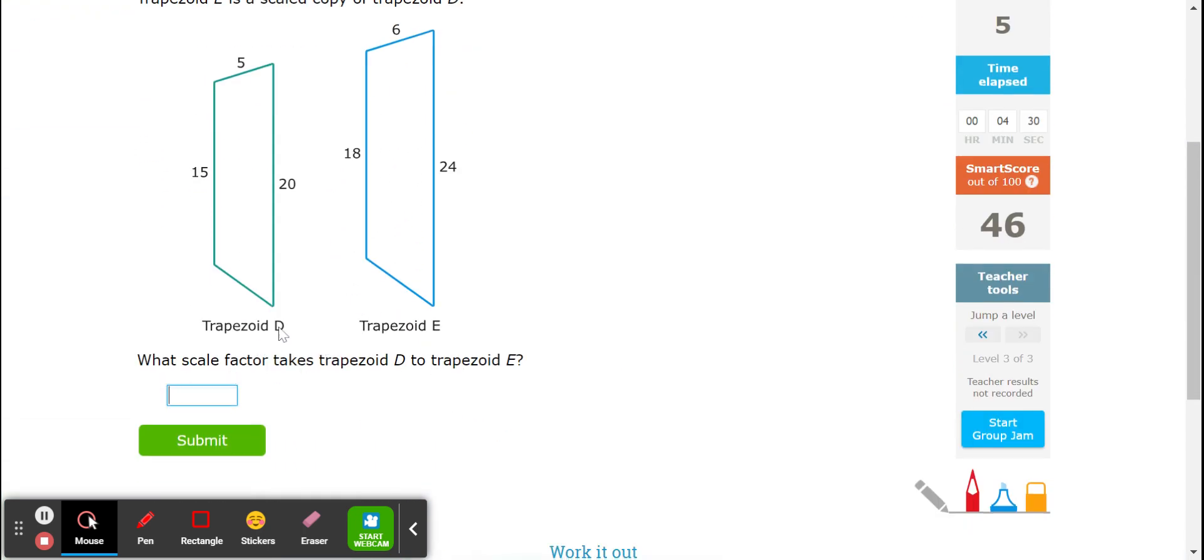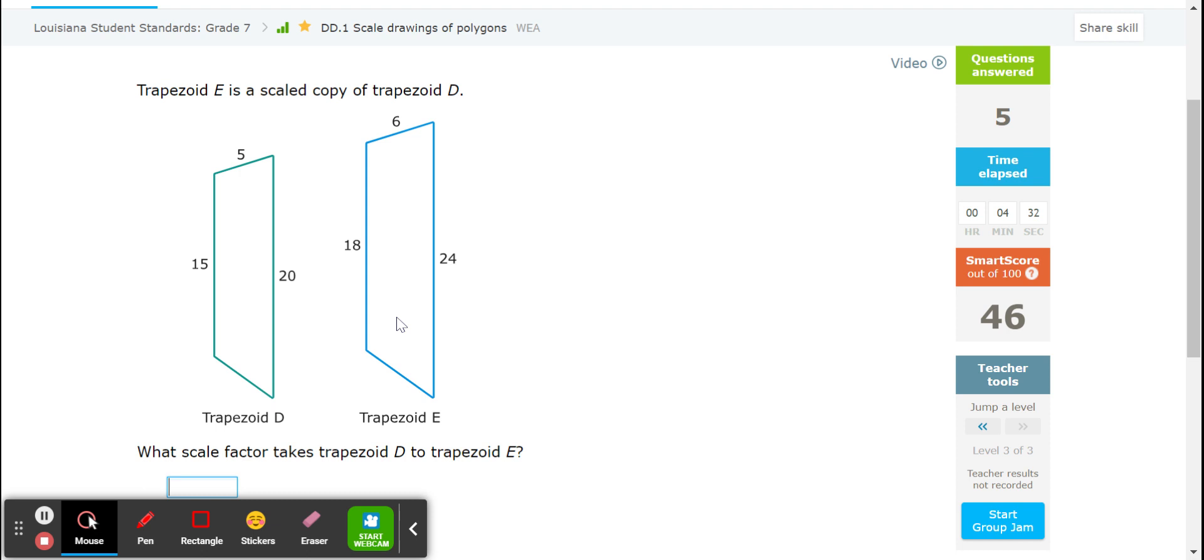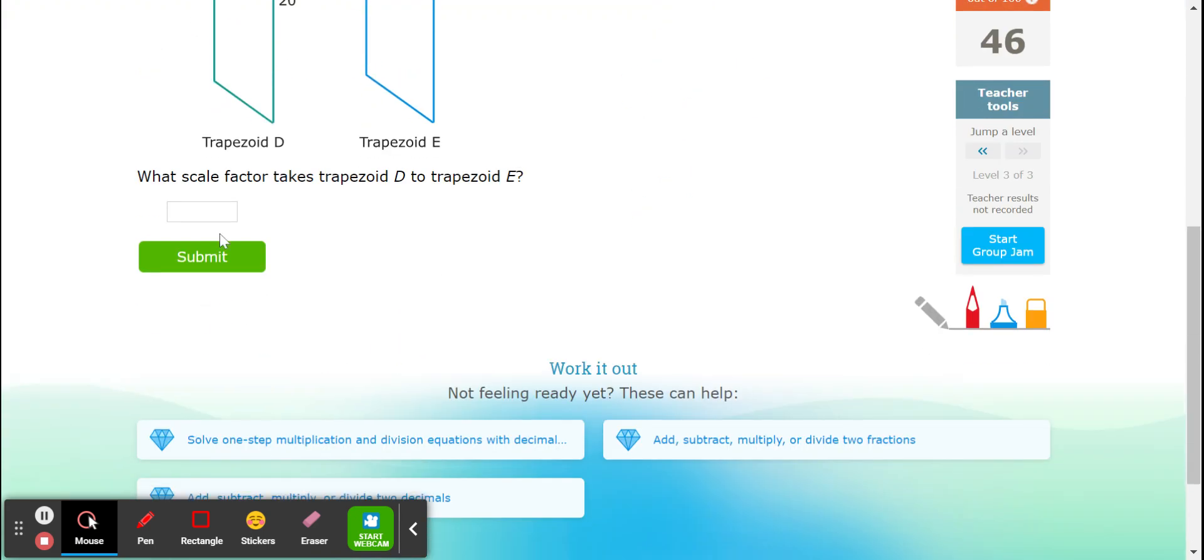Scale factor takes trapezoid D to trapezoid E. All right. Just a scale factor. 6 over 5. There's your scale factor.